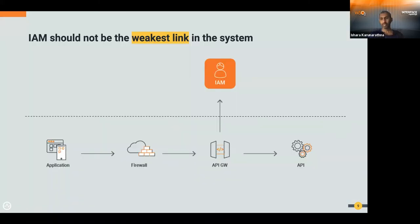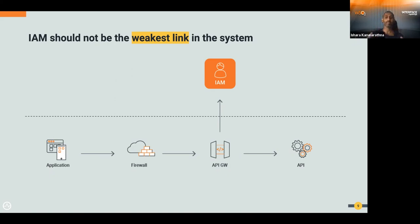When implementing a system, the strength of the whole system does not go beyond the weakest link. So when implementing an API security platform, we must make sure that the identity and access management component is not going to be that weakest link.